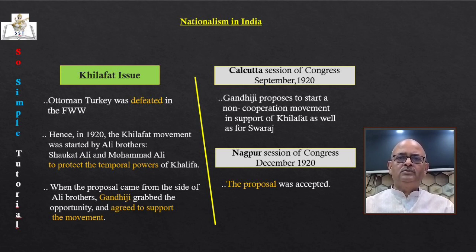The Rowlatt Satyagraha had turned into an all-India struggle but was still restricted to cities and towns. Mahatma Gandhi felt the need to launch a broader movement but knew it was not possible without bringing Hindus and Muslims together. When the proposal came from the Ali Brothers, he readily grabbed the opportunity and agreed to support the movement. A special session of Congress was called in Calcutta in September 1920 to discuss a non-cooperation movement in support of Khilafat as well as for Swaraj.